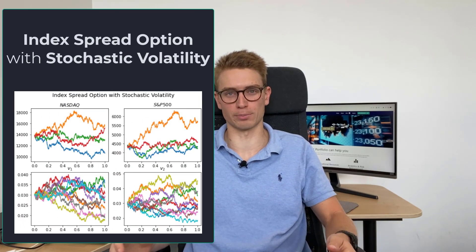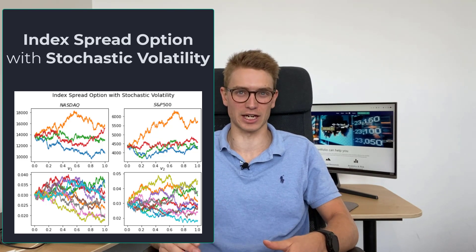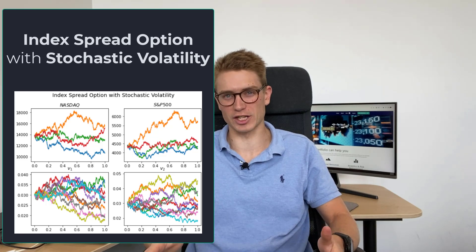Today we're going to be looking at how you can actually calculate a spread call option on two indices — the Nasdaq and the S&P 500. We've done a previous video where we computed the call value of the spread, but now we're going to incorporate stochastic volatility into our models. We've recently been looking at the Heston model, which uses the square root variance process to get a stochastic volatility measure while computing option prices, and we're now going to apply this to our spread call option of these two indices.